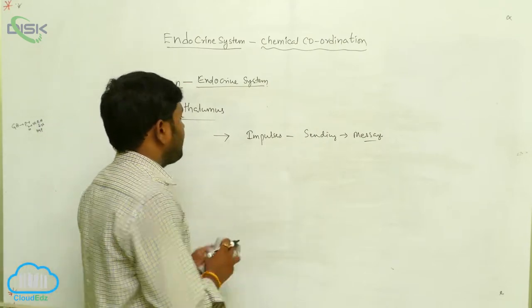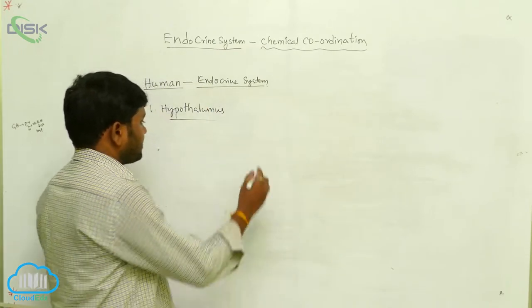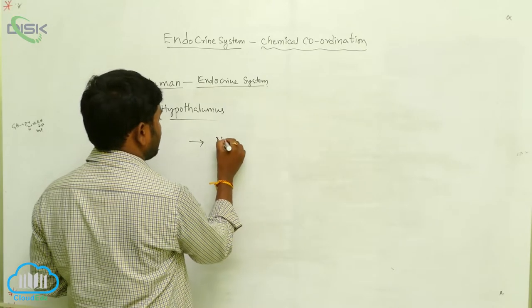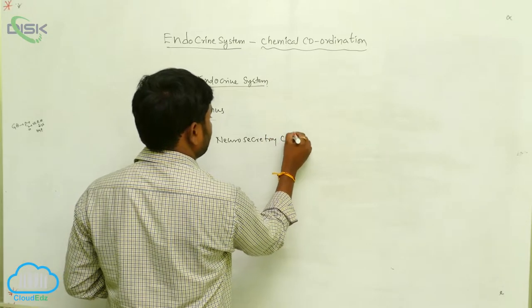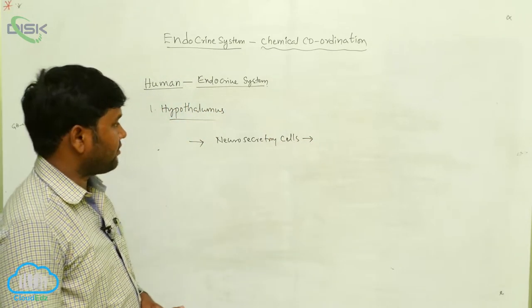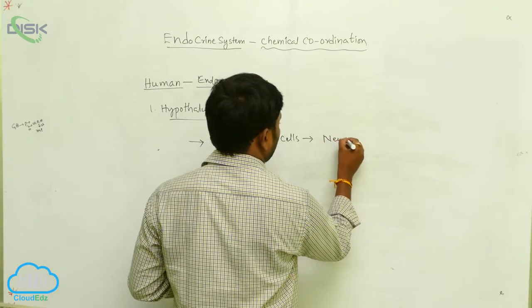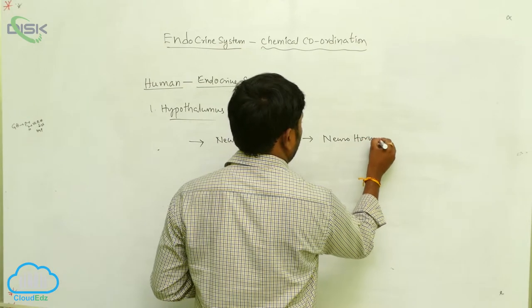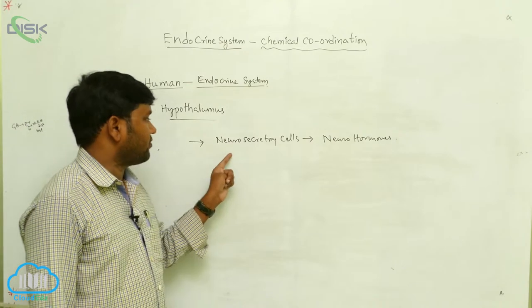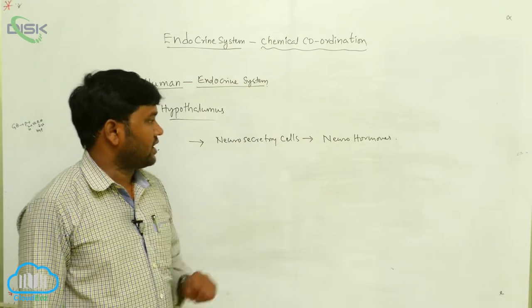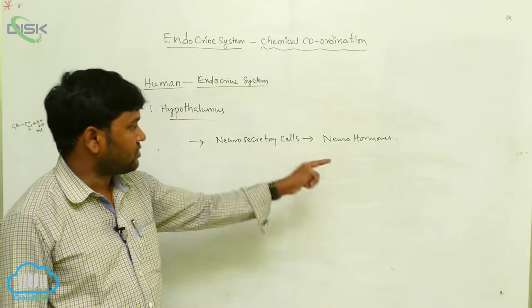The hypothalamus receives different impulses from different receptors and sends response messages to the appropriate organs. It consists of neurosecretory cells. The hormones secreted by these cells are called neurohormones.